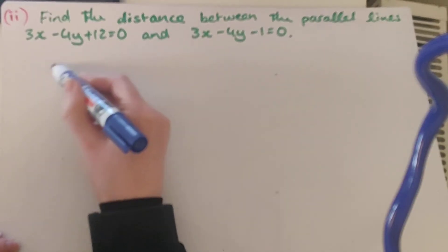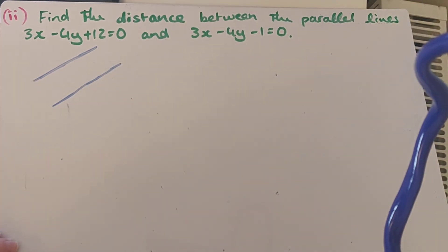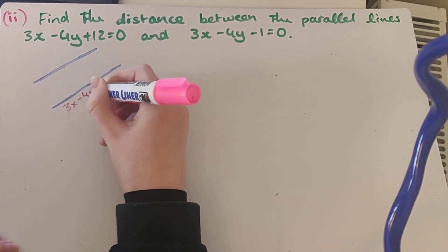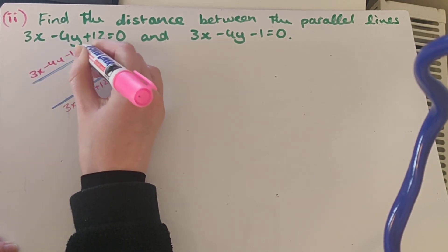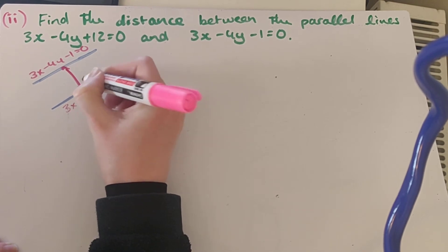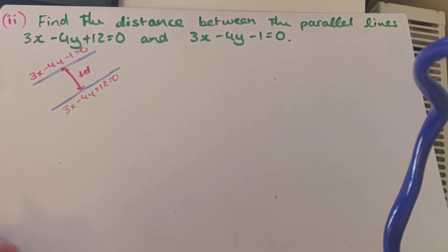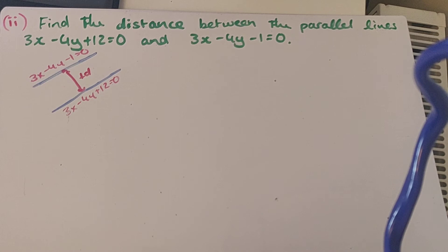These two lines are parallel because the x coefficient and the y coefficient are the same, which means the slope of each line is 3 over 4. What we know about parallel lines is that they run parallel to each other and never meet. So the perpendicular distance between these two lines at any point is going to be the same because they're parallel. So all I need to do is find a point on one of the lines to find the perpendicular distance between them. I'm going to use the top line here, and the easiest point to find is where it crosses the x-axis or the y-axis.